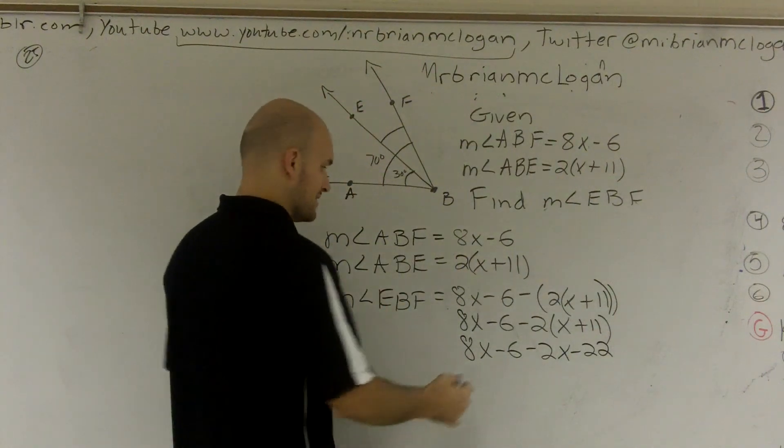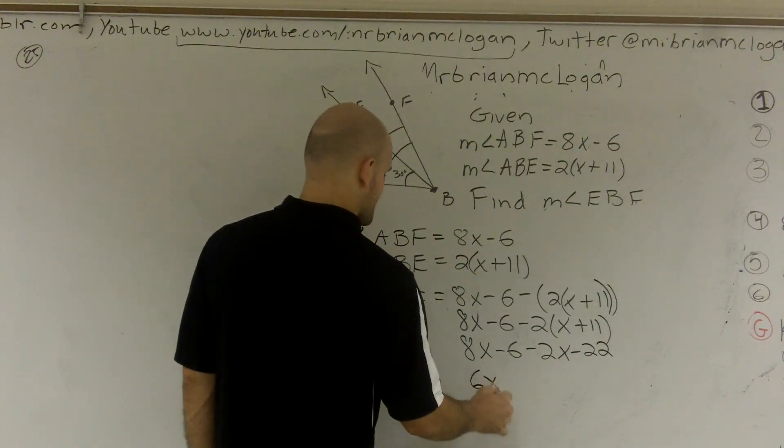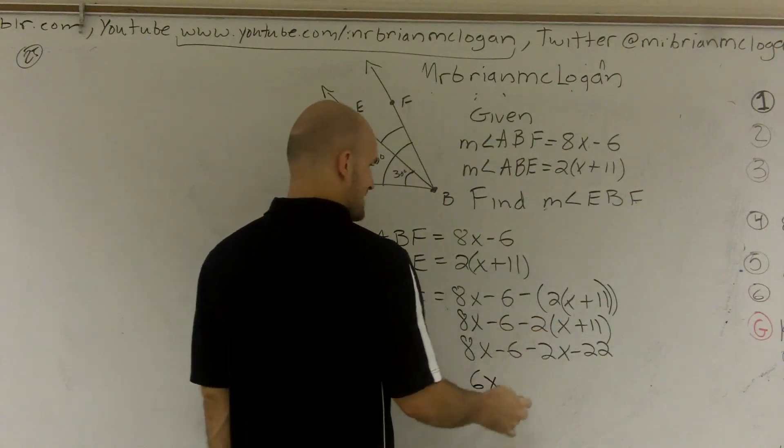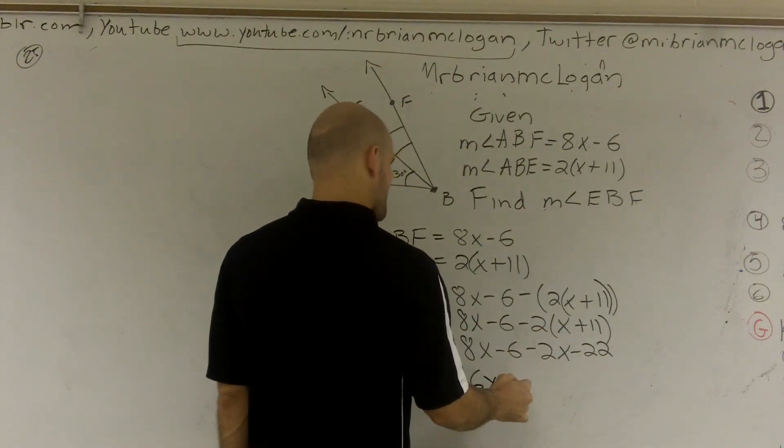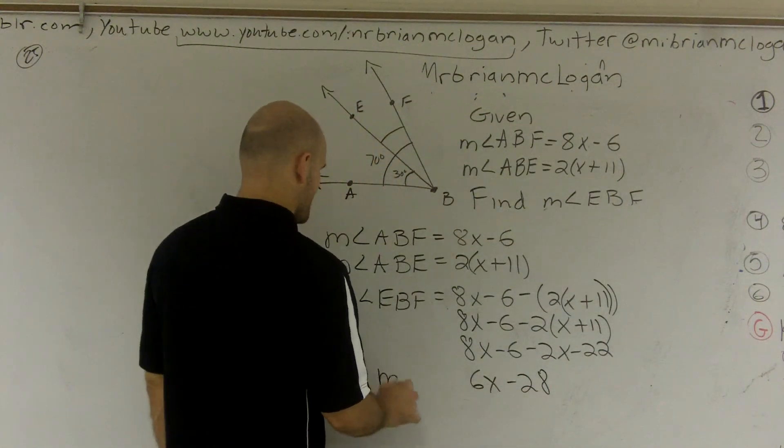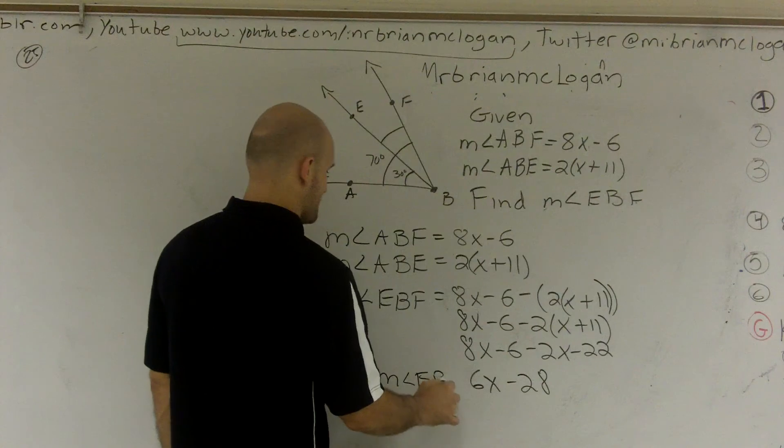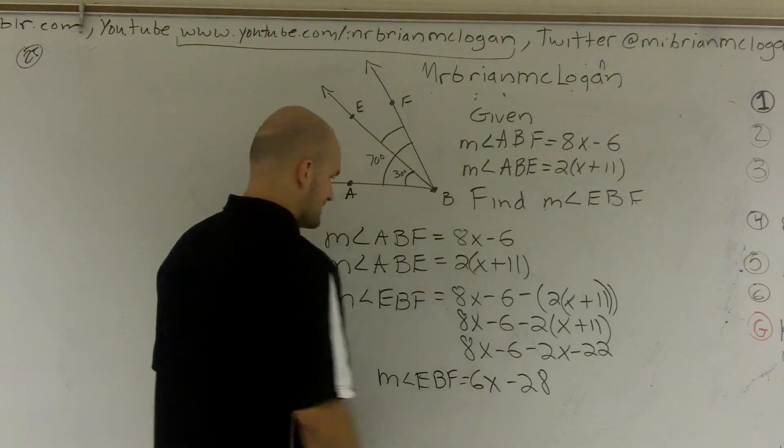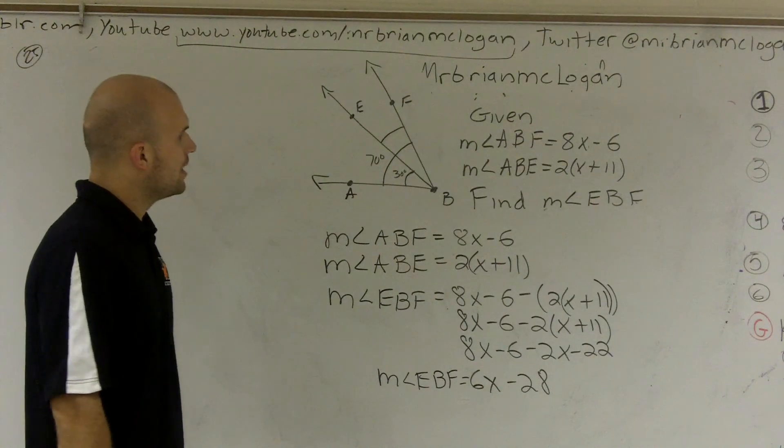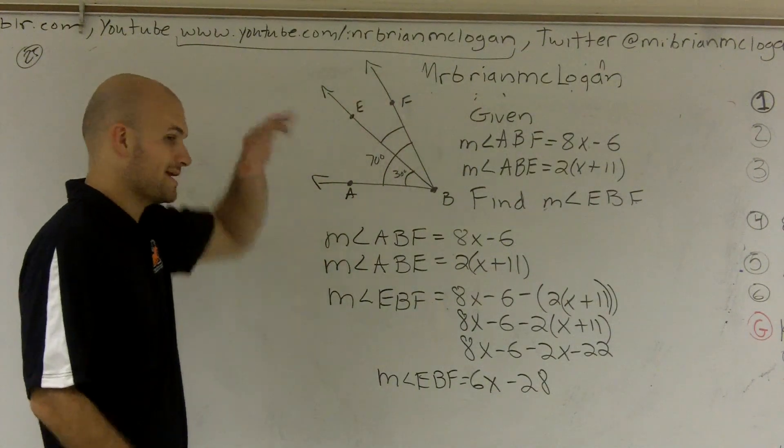Now I can combine my like terms. This gives me 6X. 8X minus 2X is 6X, negative 6 minus 22 is going to give me negative 28. So the measure of angle EBF is equal to 6X minus 28, and that is how you find the value of an angle when given the whole and a part.